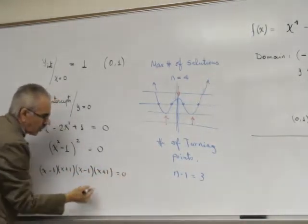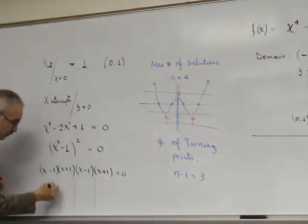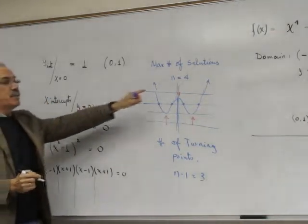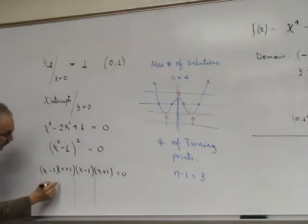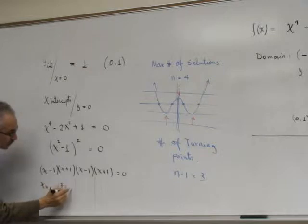Equals to 0. We have four solutions as we predicted before: x equals to 1, x equals to minus 1, x equals to 1, x equals to minus 1.